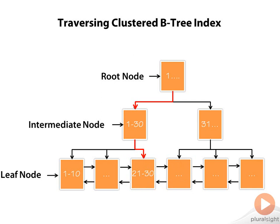This was a straightforward explanation of how cluster B-tree index works and how locating accurate data happens in the index. Remember, in the case of the cluster index, all the data is located in a leaf node. This is not true if we are talking about secondary index for InnoDB. Let's understand how secondary index works next.